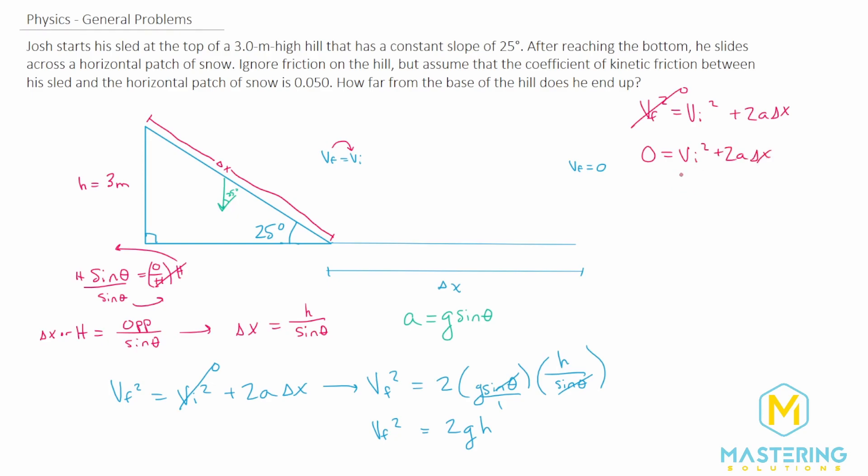And then we'll subtract this over. So we have negative vi squared is equal to two a delta x, we want to isolate the delta x. So we have two a, two a, so delta x is equal to negative initial velocity squared divided by two times the acceleration. All right, we need some more room.